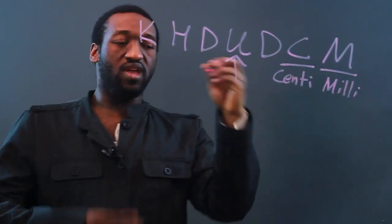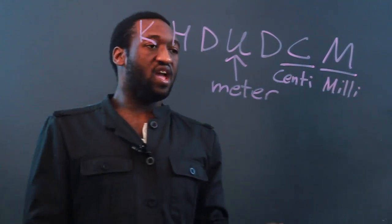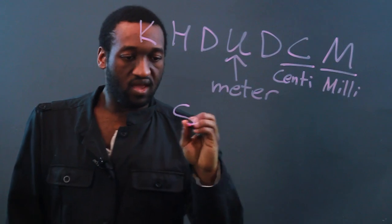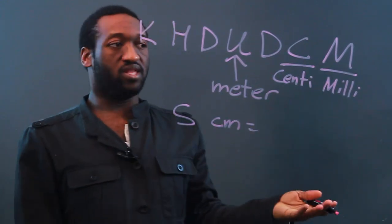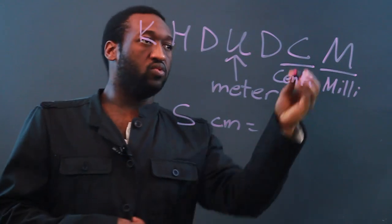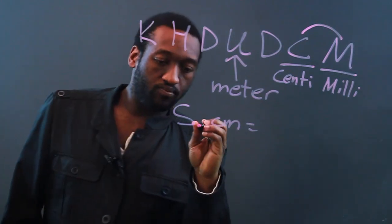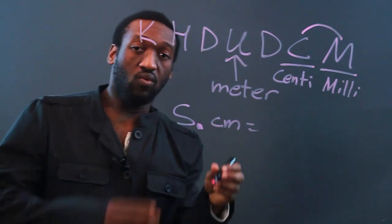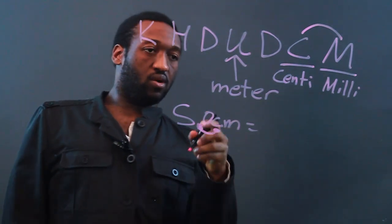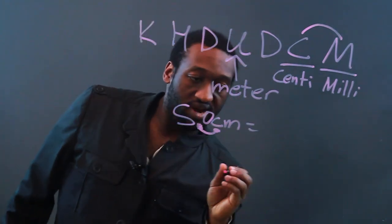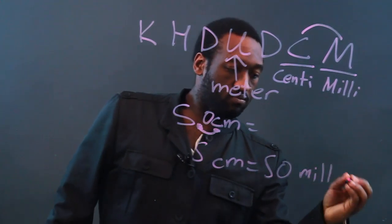And let's say our unit, since we're talking about length, will be the meter. So let's say I wanted to go from five centimeters and figure out how many millimeters that is. Well, what we will do is we see that the milli is one place to the right, so we'll move the decimal point one place to the right. So five centimeters equals 50 millimeters.